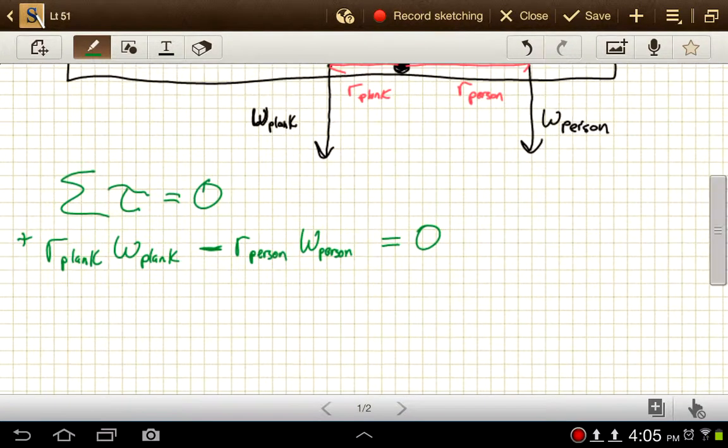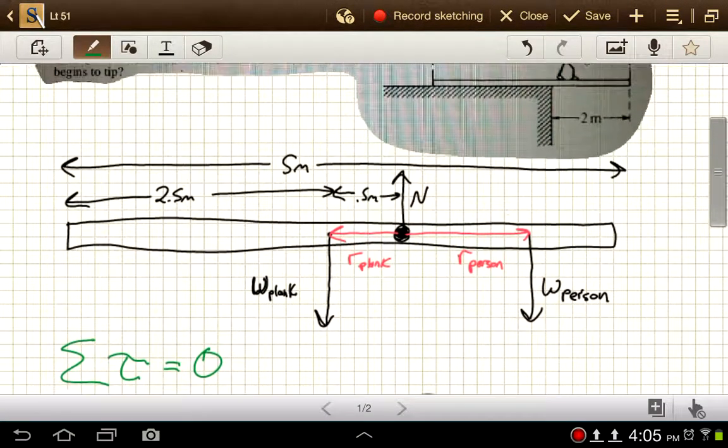So now we can see that the distance from the point of rotation to where the weight force is, or the center of gravity is, for this plank, that has to equal the distance to the person times the weight of the person. And now we can solve for all that.